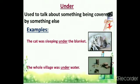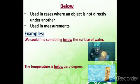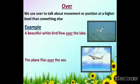'Under' is used to talk about something being covered by something else. Examples: The cat was sleeping under the blanket. The whole village was under water. 'Below' is used in cases where an object is not directly under another, and used in measurements. Examples: We could find something below the surface of water. The temperature is below zero degrees.